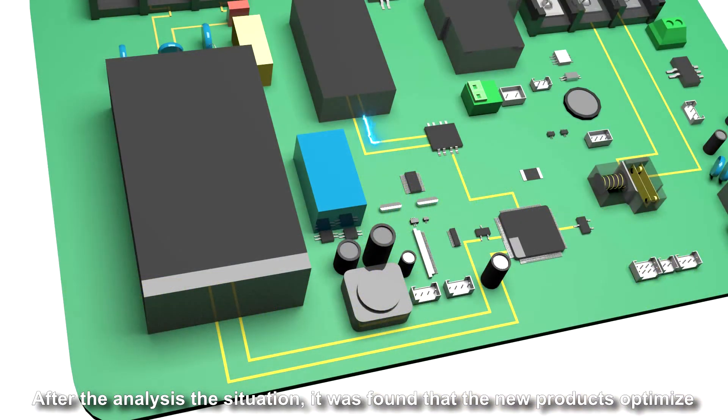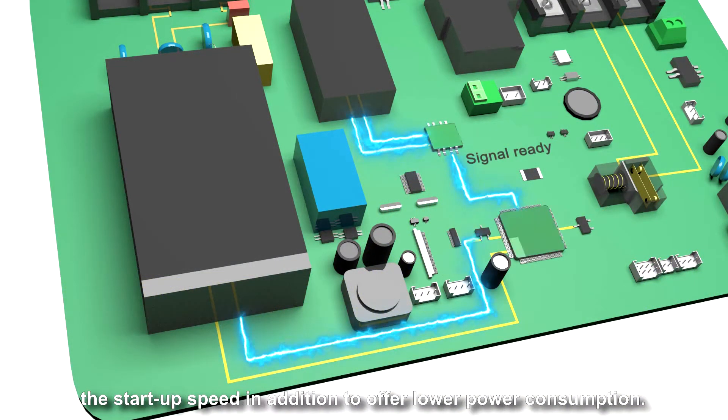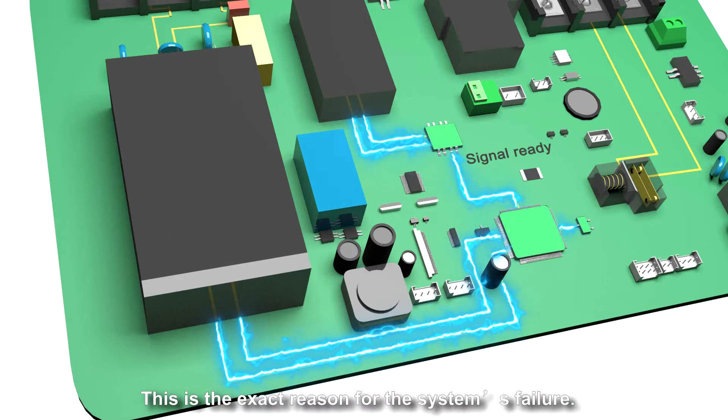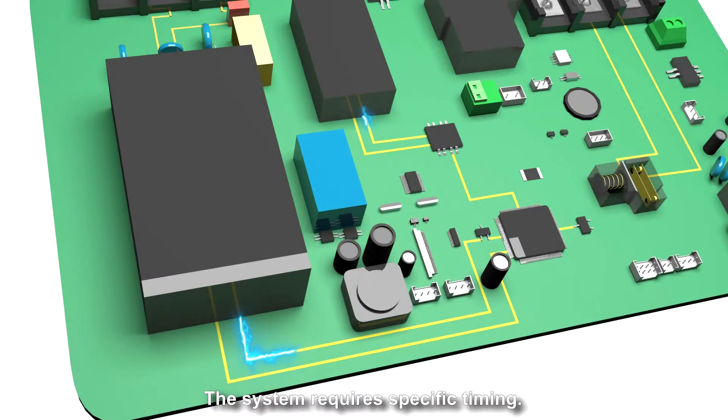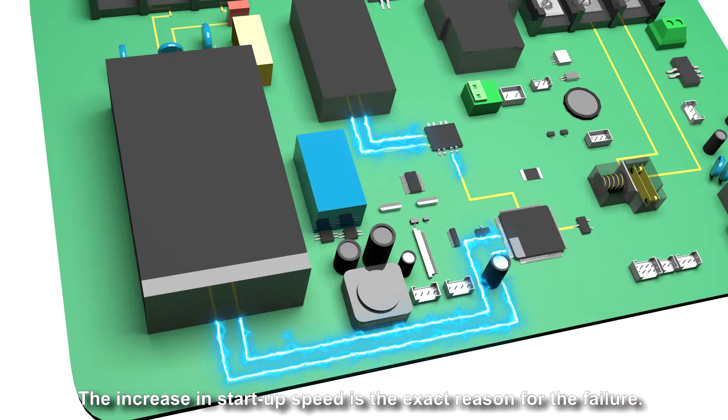After analyzing the situation, it was found that the new products optimize the startup speed in addition to offering lower power consumption. This is the exact reason for system failure. The system requires specific timing. The increase in startup speed is the exact reason for the failure.